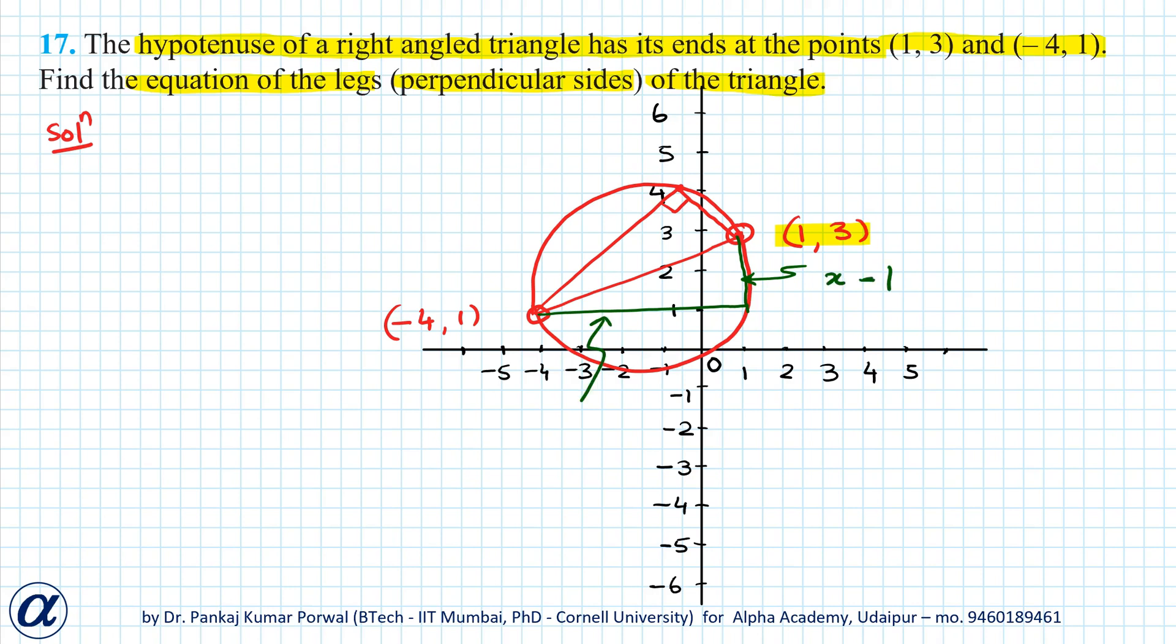And the equation of the horizontal leg will be y equals 1, because it is parallel to the x-axis and passes through point (-4,1).